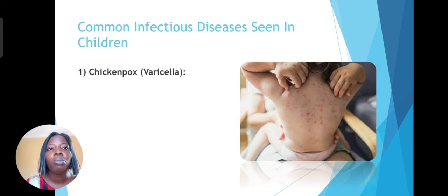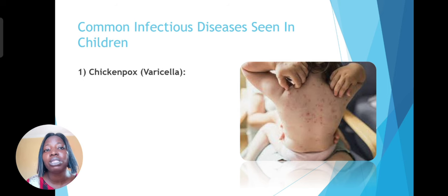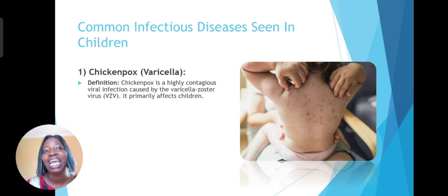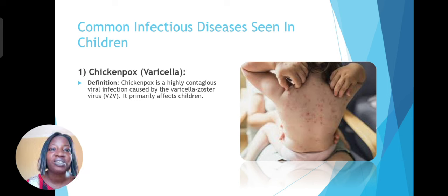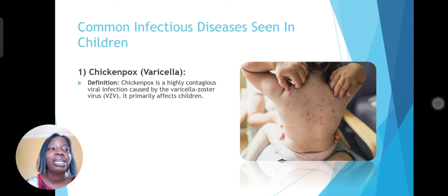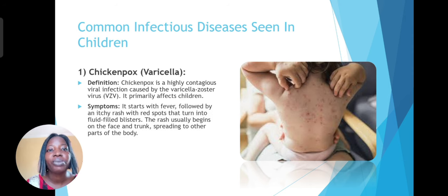Let's look at the common infectious diseases seen in children. The most common ones include chickenpox, which comes in the form of rashes. Chickenpox is highly contagious — once someone gets chickenpox and is in contact with another person, that person is highly likely to get it. It's caused by the varicella zoster virus and primarily affects children compared to adults. Symptoms include fever followed by itchy red spots and rashes that can turn into fluid-filled blisters. This is different from measles and other types of pox.